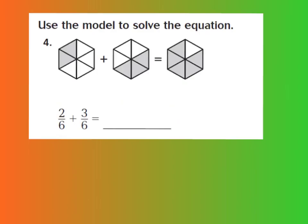Here's number 4 in your GoMath book. I want you to use the model they gave you and also the equation to figure out the answer. Press play when you're ready to go over it. The model shows 6 equal parts — 2 of them shaded, plus 3 parts out of 6 equal parts shaded. So 2 plus 3 gives me 5, and the denominator stays at 6. That's 5 sixths, and the model confirms 5 out of 6 parts shaded.